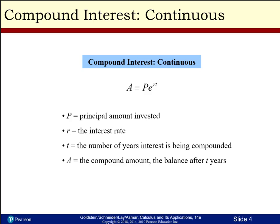Here's the compound interest formula for continuous compounding, otherwise known as the PERT formula — see if you can guess why it's called the PERT formula. A equals P times e raised to the rt, with all variables being the same as the previous formula.